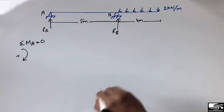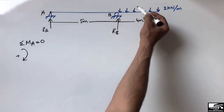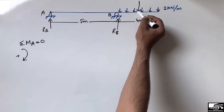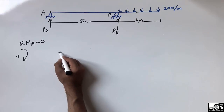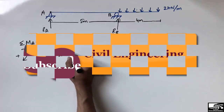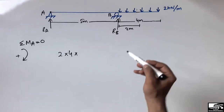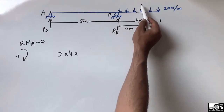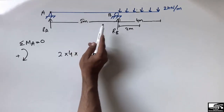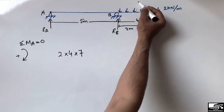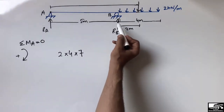I suppose that clockwise moment is positive. The 2 kilonewton per meter load produces a clockwise moment, so it is taken as positive. The moment is calculated as 2 kilonewton per meter × 4 meters, with a moment arm of 5 meters plus half of 4 meters (which is 2 meters), giving a total moment arm of 7 meters. So the moment is 2 × 4 × 7 = 56 kilonewton·meter.